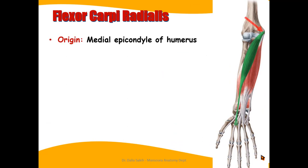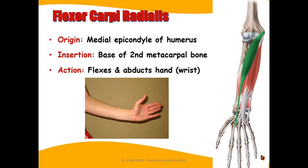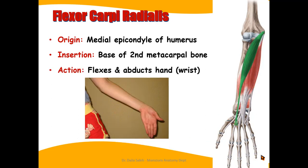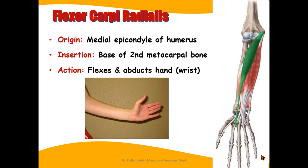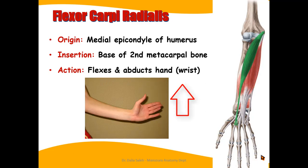For the flexor carpi radialis, it arises from the medial epicondyle of the humerus from the common flexor origin. It inserts into the flexor retinaculum and at the base of the second metacarpal bone. It acts by flexion and abduction of the wrist — we also call this radial deviation.